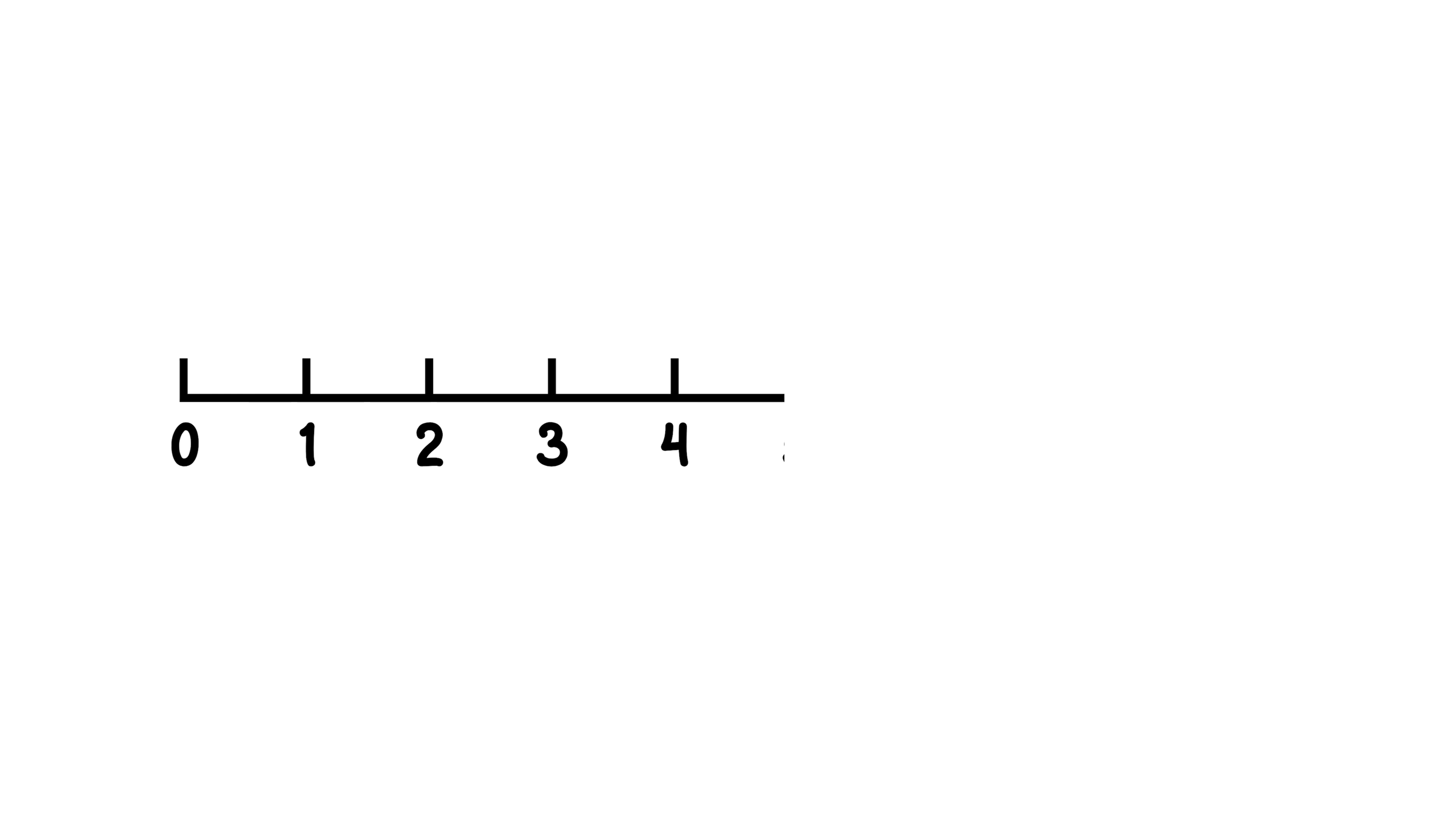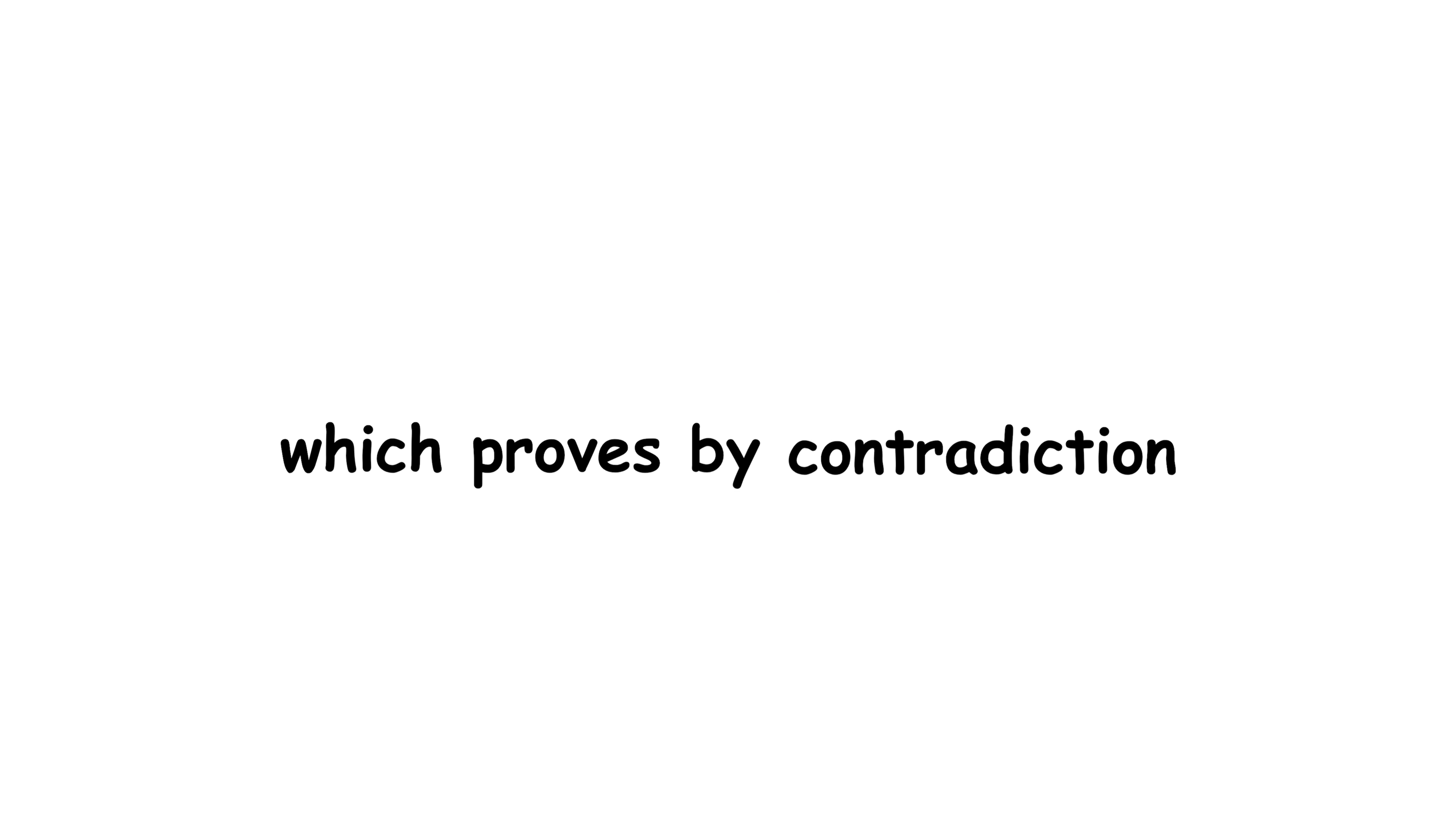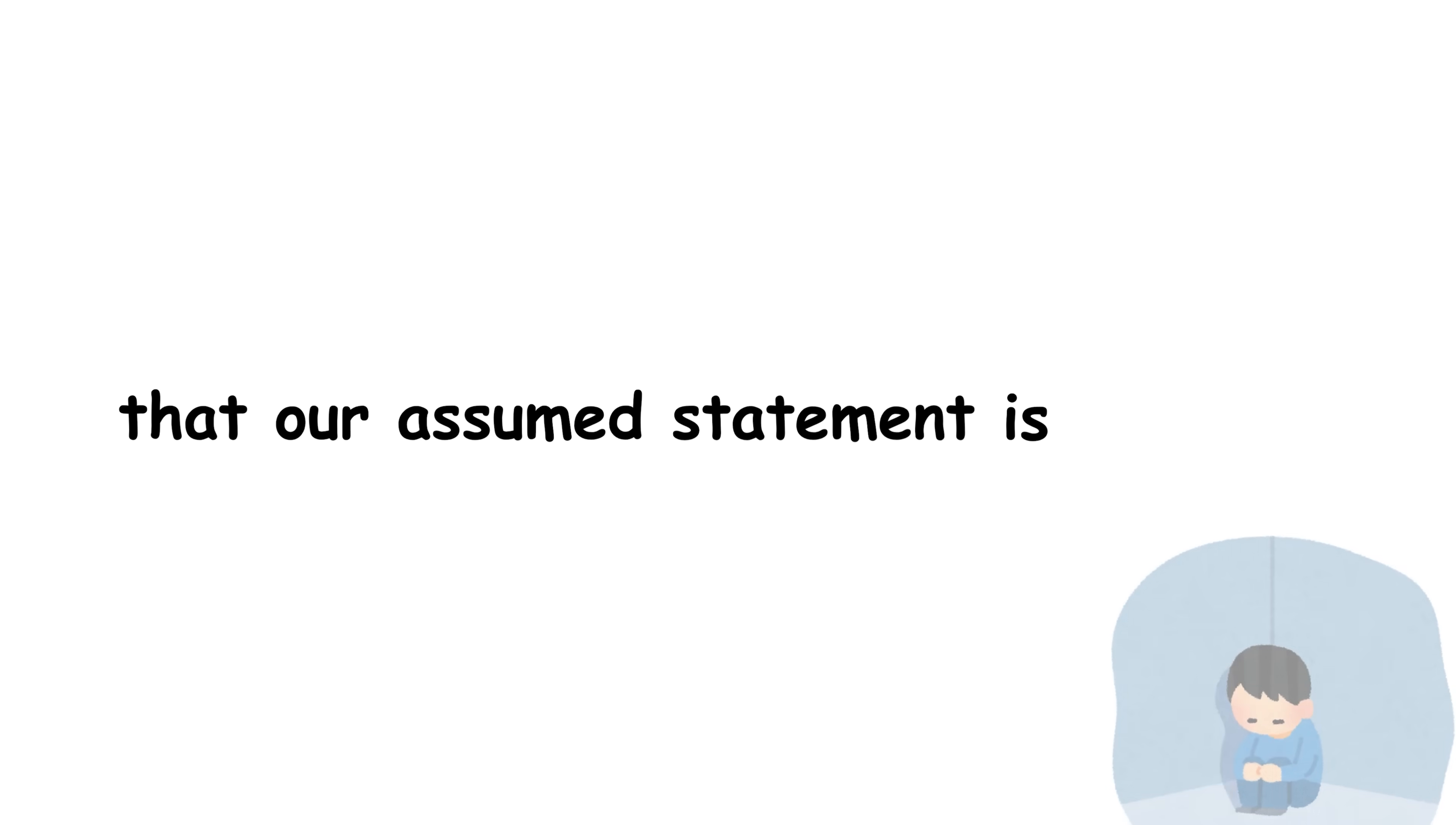This results in an infinitely descending chain of natural numbers. But that's obviously impossible. The set of natural numbers is well-ordered, which means that any subset must contain a smallest natural number. So, the existence of an infinite descent is impossible, which proves, by contradiction, that our assumed statement is false.